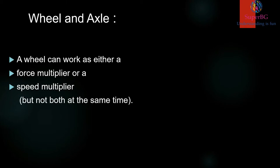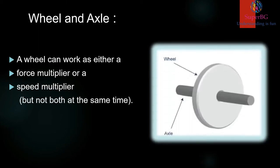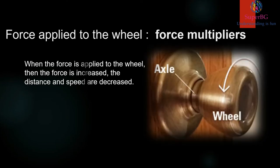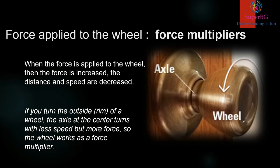A wheel can either work as a force multiplier or a speed multiplier but not both at the same time. When the force is applied to the wheel, then the force is increased. The distance and speed are decreased. If you turn the outside rim of a wheel, the axle at the center turns with less speed but with more force. So the wheel works as a force multiplier.